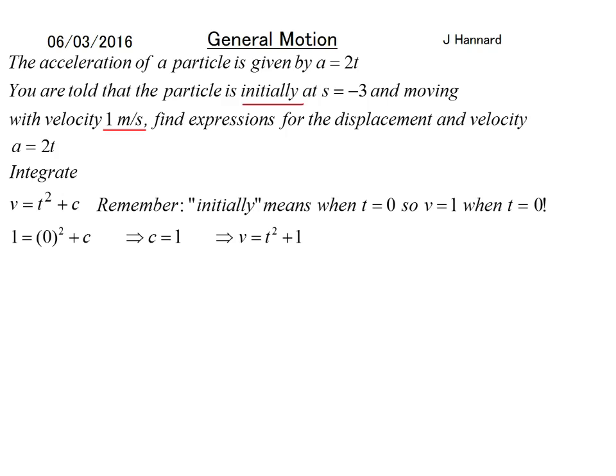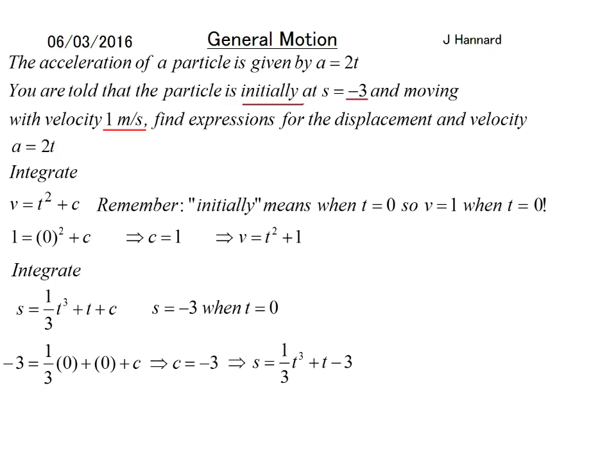Now we want an expression for the displacement. So we integrate our v equation. Don't forget C, add 1 to the power divided by the new power as well. We're given that initially s = -3. So if we set that equal to -3 and put 0 through, we can work out C. So C, in this case, is -3. And then we rewrite the equation with C in there. And that is all you need to know about general motion.